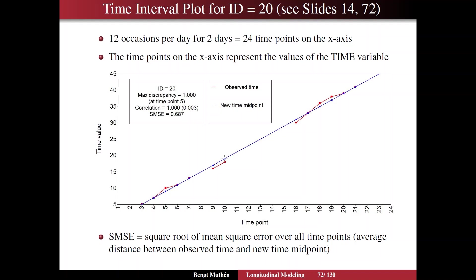You saw that on slide 70. This new time midpoint is also the name of that variable in the saved data on slide 69 to 70 is underscore new time, just to orient you in this. So you can scroll through different IDs in these time interval plots and take a look at to which extent there is an important discrepancy between the red and the blue. And again, the maximum discrepancy is given over all the time points for a person and the average.